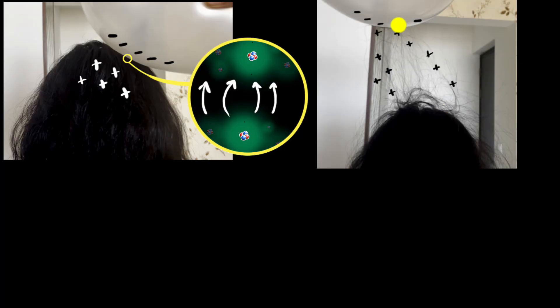Anyways, because my hair is positively charged and the balloon is negatively charged, they will attract each other. And that's why when we move the balloon away, the hair starts standing because it is getting attracted to the balloon. Beautiful, isn't it?